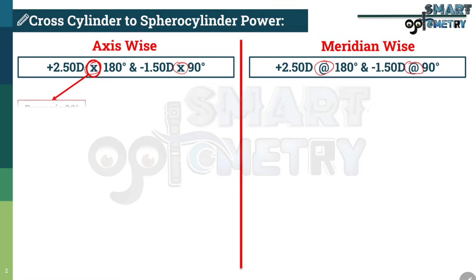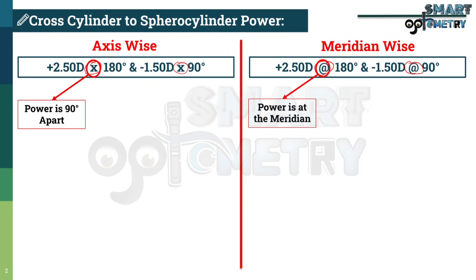The cross symbol means the power is 90 degrees apart from the axis. So here, the axis is 180 degrees, so the power will be at the 90 degree meridian. This is the difference between axis and meridian — power is always present 90 degrees apart from the axis. The at-the-rate symbol means the power is at that meridian directly.